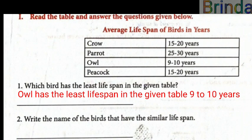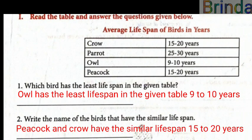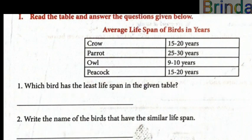Next question: Write the names of the birds that have the similar lifespan. In the table, two birds have the same lifespan — peacock has 15 to 20 years, and crow also has 15 to 20 years. So crow and peacock have the similar lifespan of 15 to 20 years.